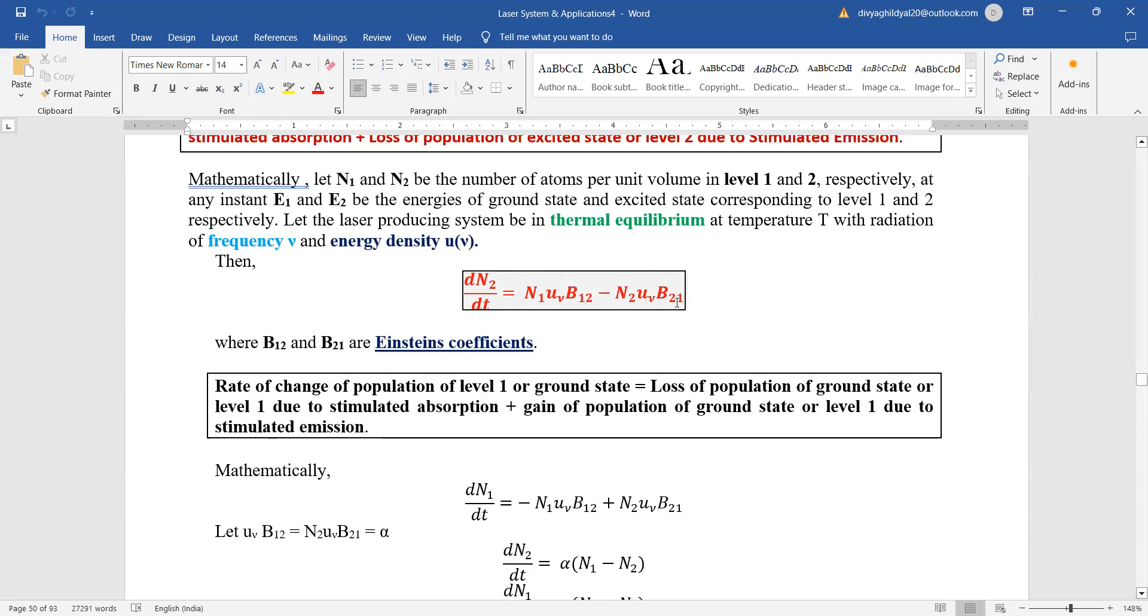Where U is energy density, B12 and B21 are Einstein's coefficients—one is of absorption and the other is of emission. Now, rate of change of population of level one or ground state is equal to loss of population of ground state or level one due to stimulated absorption.